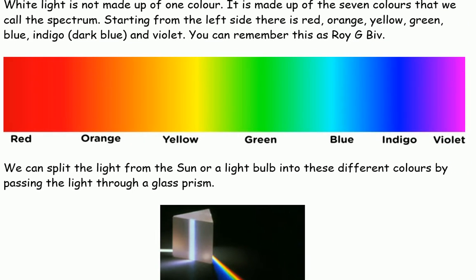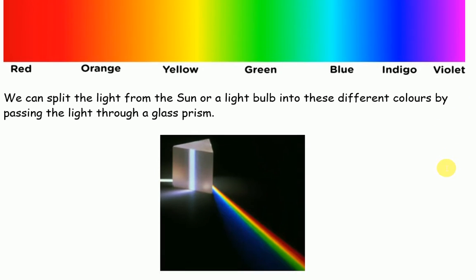We can split the light from the sun or a light bulb into these different colours by passing the light through a prism.